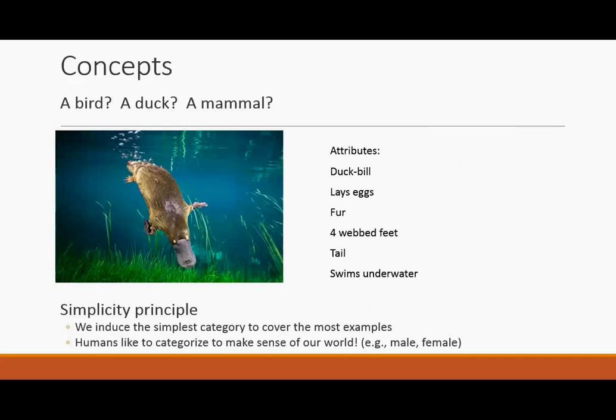The simplicity principle says we induce the simplest category to cover the most examples. Humans like to categorize to make sense of our world. In the past we could get away with simple categories like male and female. Now, if I make a survey asking people if they're male or female, somebody may get offended because I did not include the possibility that they may be transgendered. But we like to have simple categories and we love to categorize things.